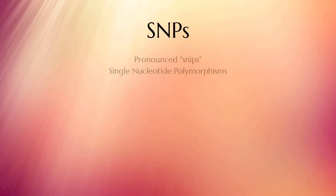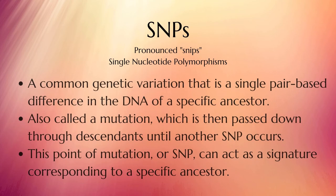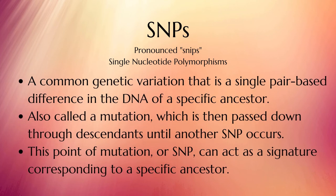SNPs — S-N-P's — pronounced SNPs, stands for Single Nucleotide Polymorphisms: a common genetic variation that is a single pair-based difference in the DNA of a specific ancestor. Also called a mutation, which is then passed down through descendants until another SNP occurs.